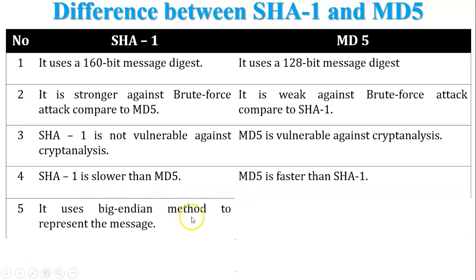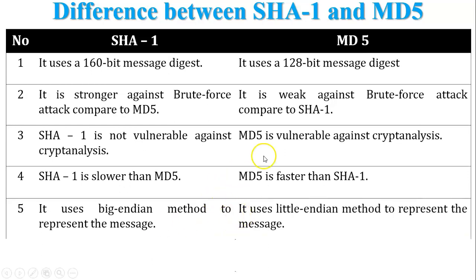SHA1 uses the Big Endian method to represent the message. The Big Endian method means the initial chaining variable value will be arranged in descending order. In MD5, it uses the Little Endian method to represent the message, meaning the value is arranged in ascending order.